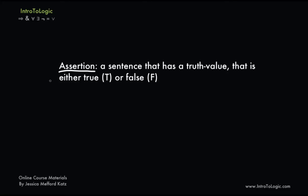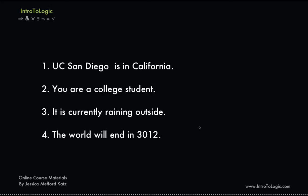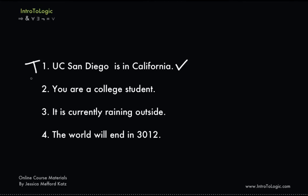We can define an assertion as a sentence that has a truth value. So it will be either true — we'll represent a true sentence with a T — or false, and we'll represent a false sentence with an F. So let's look at some examples. Consider number one: UC San Diego is in California. Is number one true or false? It is in fact an assertion because we know that it is either true or false that UC San Diego is in California. And it turns out actually to be true in this case, so we can give it a T.